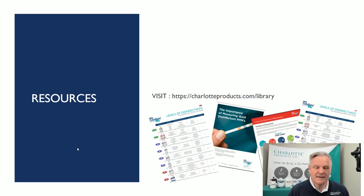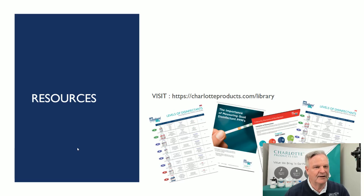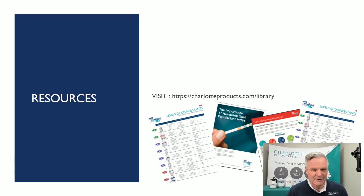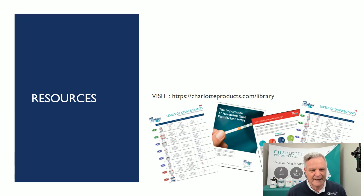There are all kinds of available resources on our charlotteproducts.com library, including guides on how to select the right disinfectant for Canada and the U.S., the five critical elements of disinfecting, and the importance of measuring parts per million and how to calculate it. That covers our topic for today. We're hosting these biweekly — our next one will cover the five critical elements of disinfecting, delivery methods, and more product knowledge. Thanks for joining us. Stay safe, and we'll talk soon.